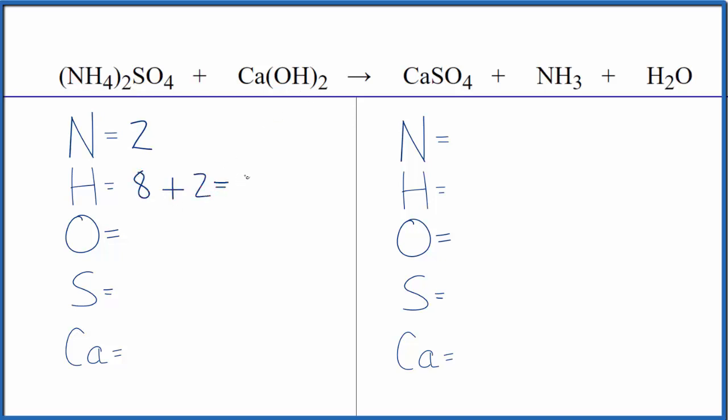For oxygens, we have four plus two times the one here. This two goes to everything again, so two times one is two, giving us six oxygen atoms. We have one sulfur and one calcium.